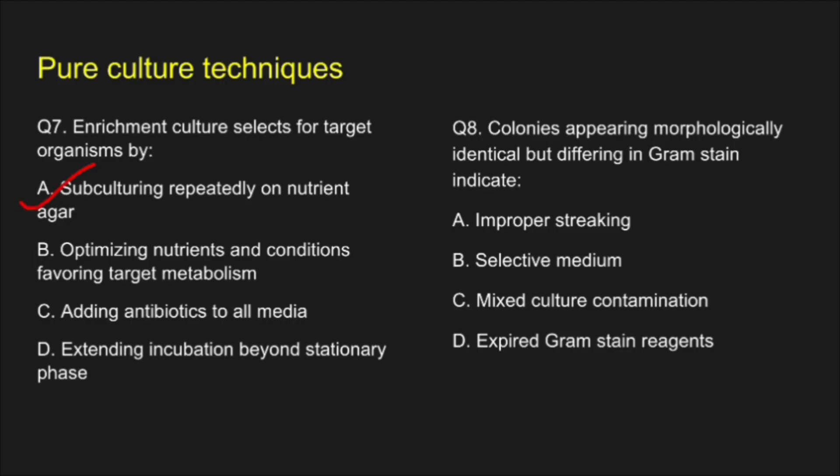Question 8. Colonies appearing morphologically identical but differing in gram stain indicate — A. Improper streaking, B. Selective medium, C. Mixed culture contamination, D. Expired gram stain reagent. The correct answer for question 8 is option C: Mixed culture contamination.